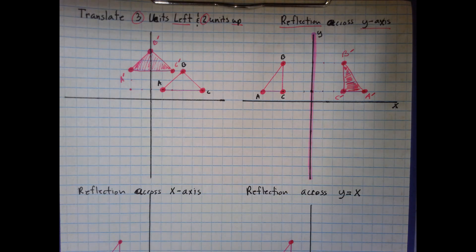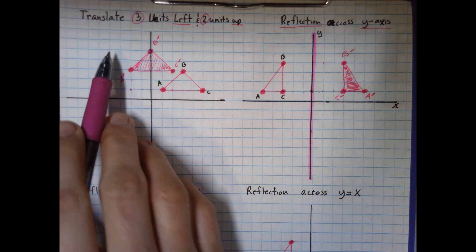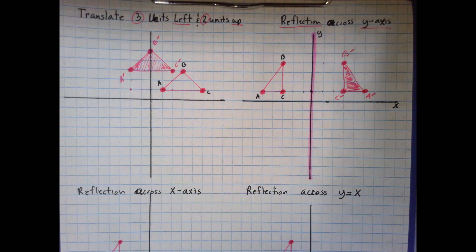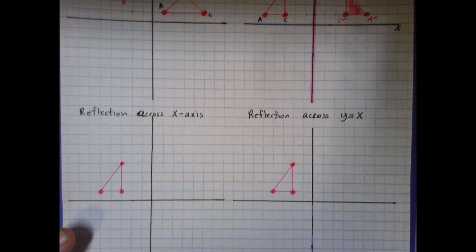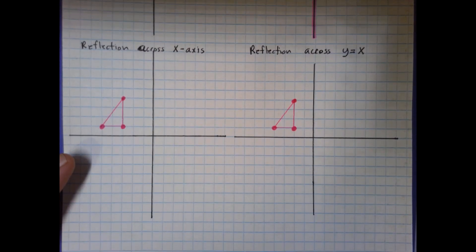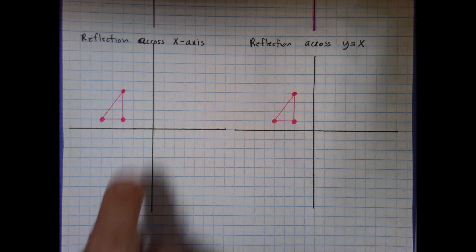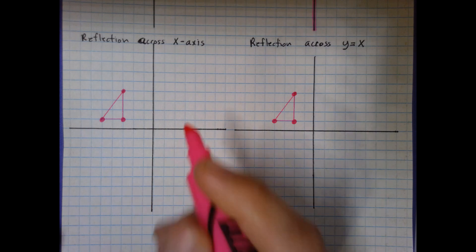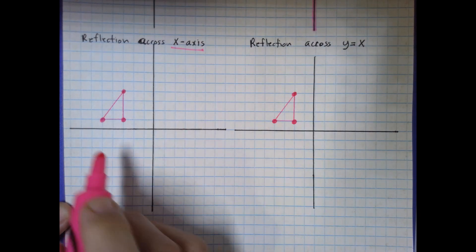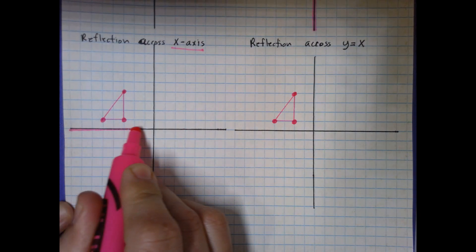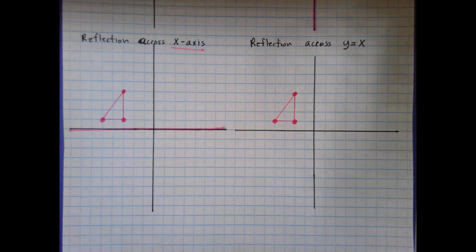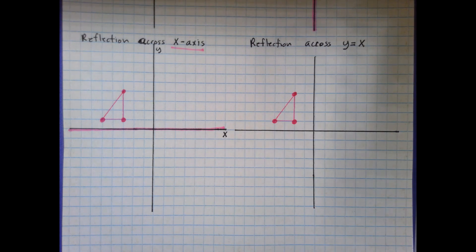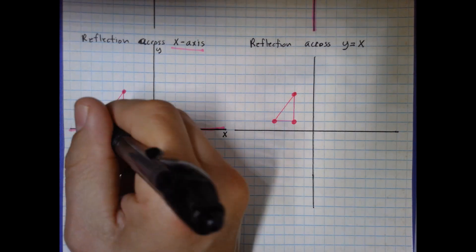Now you know how to do a translation and a reflection over the y-axis. Let's look at a reflection over the x-axis. It's very similar — the only difference is instead of flipping over the vertical y-axis, we're reflecting over the x-axis, which runs left and right.